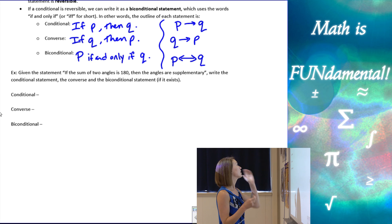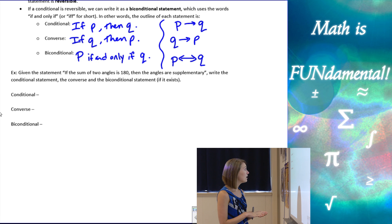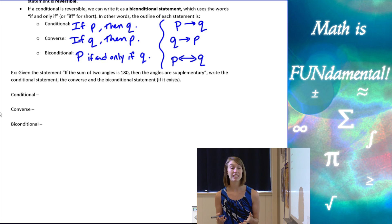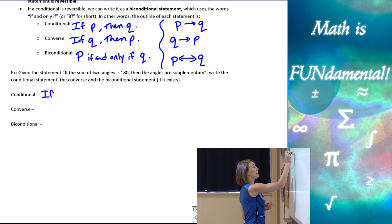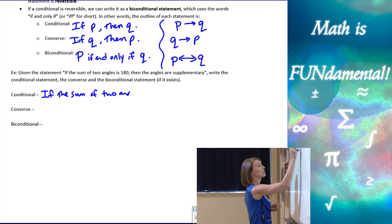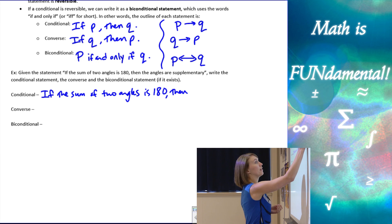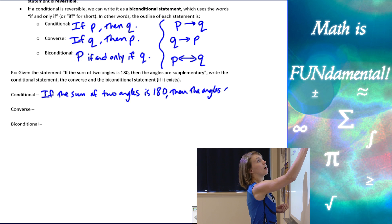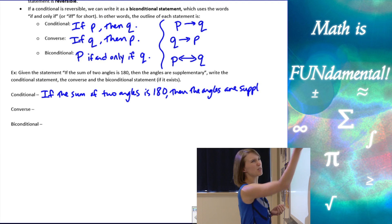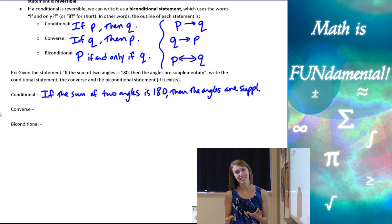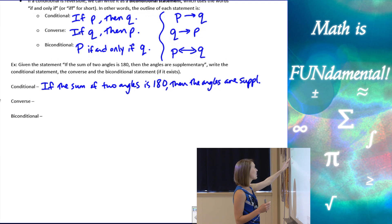Let's look at our first example. Given the statement: "If the sum of two angles is 180, then the angles are supplementary," we want to write the conditional statement, the converse, and the biconditional statement if it exists. The conditional statement is what we were given: "If the sum of two angles is 180, then the angles are supplementary." Sometimes they want you to write all three, even though one of them is already in the directions.